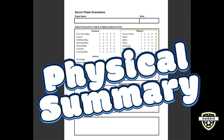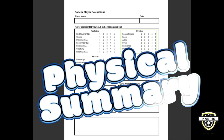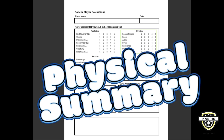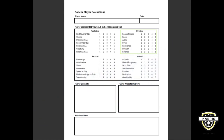In summary, these physical attributes are key to becoming a successful soccer player. Soccer fitness, speed, and endurance help us perform well throughout matches, while agility and balance allow us to navigate the field effectively. Power and strength give you an edge in making impactful plays, and by focusing on these attributes you not only improve your skills but also build confidence in your abilities on the field.